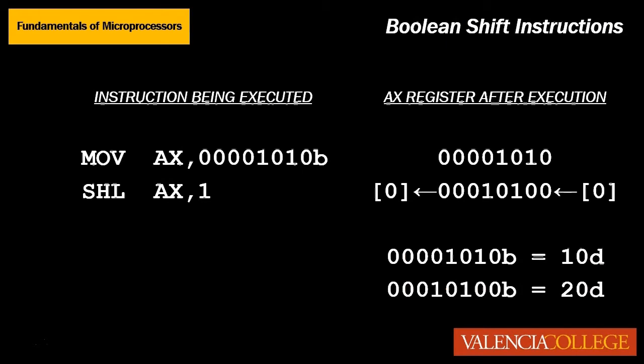For example, if we start with the following binary value in the AL register, remember this is an 8-bit register, 00001010. We know that the value in decimal is 10.